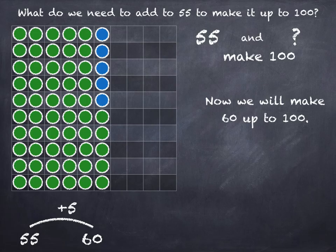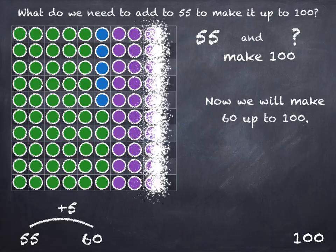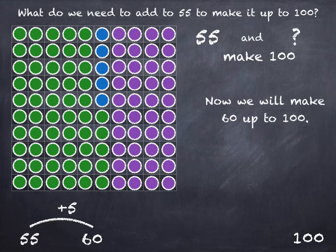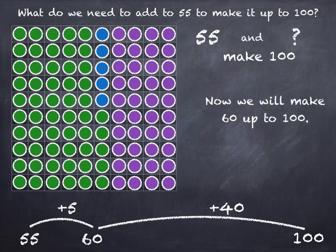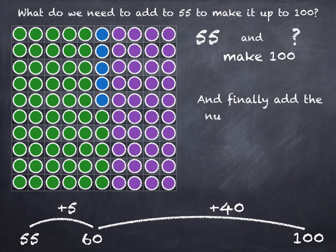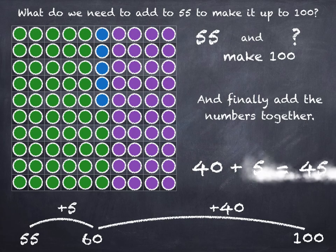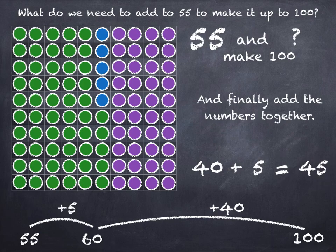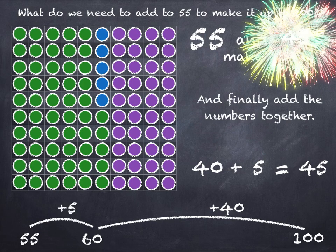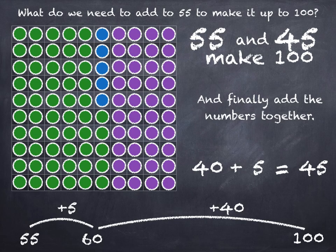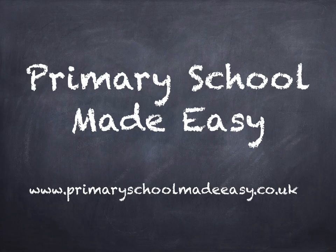And then we've got to get from 60 to 100. Let's go up in tens — 4 tens, that's 40. So 60 plus 40 takes us to 100. And all together we've added on 40 and 5, which is 45. So 55 and 45 make 100. Thank you for watching and I'll see you next time.